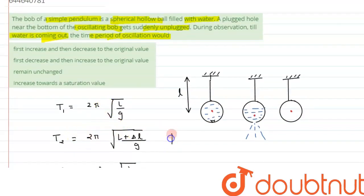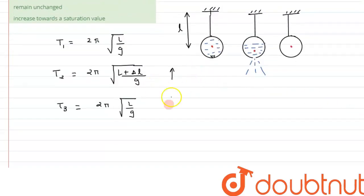All right, so what we can observe here is first the time period will increase. Here in this case, the time period has been increased, and again it will decrease and shift back to its original position. So from the option we can say it first increases then decreases to the original value. So the correct option matching is option A. So I hope you have understood the concept and thank you for watching.